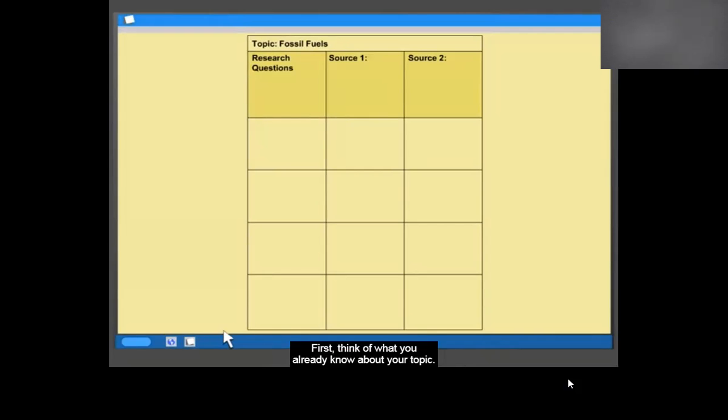First, think of what you already know about your topic. Then, think of the research questions you have about your topic. This gives you a purpose for reading. Put these research questions in a chart.